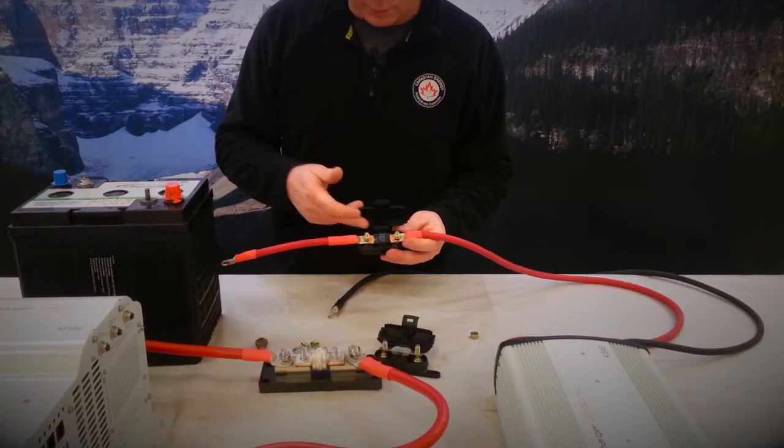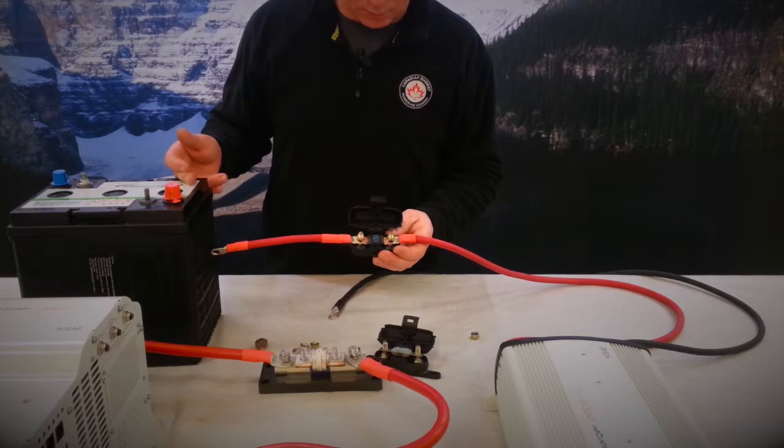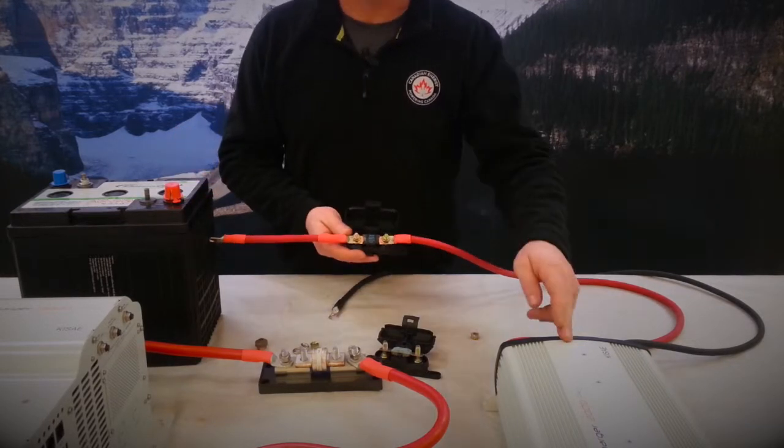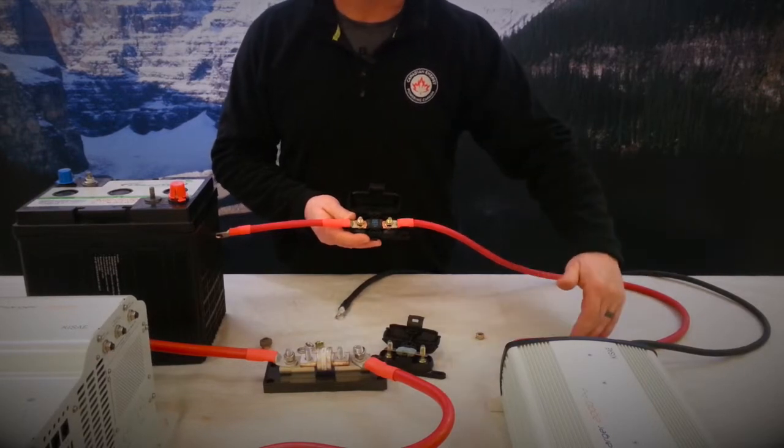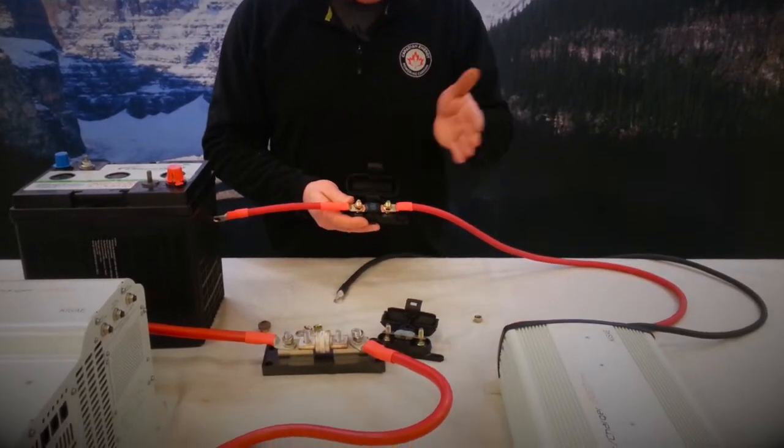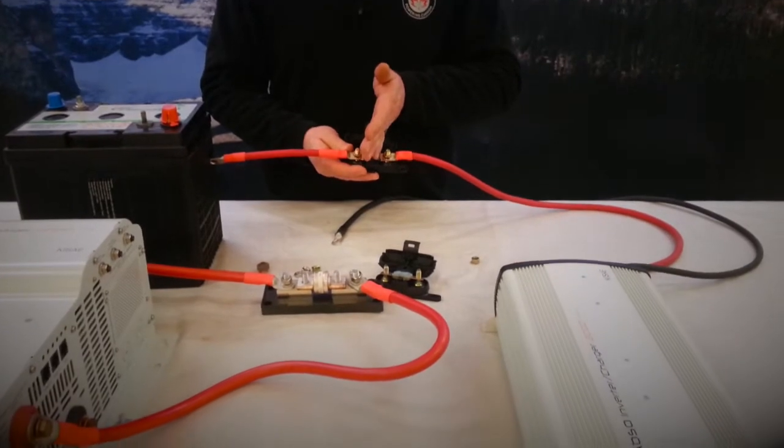So the reason we keep the fuse as close to the battery as possible is we're not trying to protect the inverter, but we're trying to protect the cable that runs to the inverter. If by chance this cable gets shorted, we're close to the battery, we're actually going to trip the fuse very quickly.